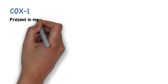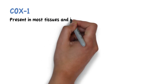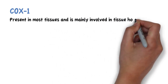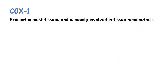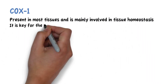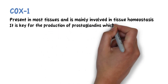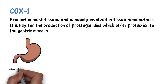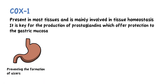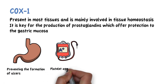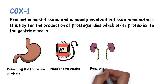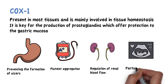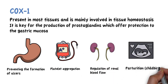COX-1 is present in most tissues and is mainly involved in tissue homeostasis. It is key for the production of prostaglandins which offer protection to the gastric mucosa, preventing the formation of ulcers. It also plays an important role in platelet aggregation, the regulation of renal blood flow, and the initiation of parturition, or childbirth.